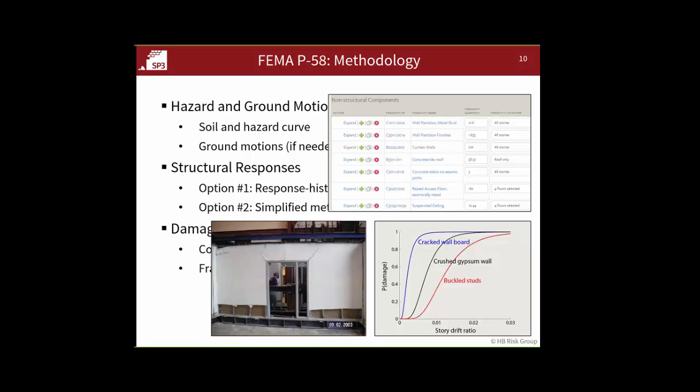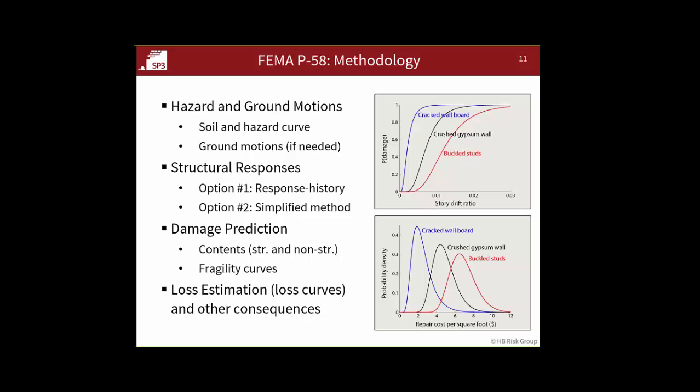Once you've handled the building contents and associated fragilities with each item, you go to the loss estimation step. Here we link damage to consequence — particularly cost of repair. A cracked wallboard has a known cost per square foot to fix; crushing costs more because the repair sequence is different; buckled studs cost even more. This step also relates damage to repair time and other consequences in P58 such as safety — if lighting fell from the ceiling, that has injury implications that are tracked.